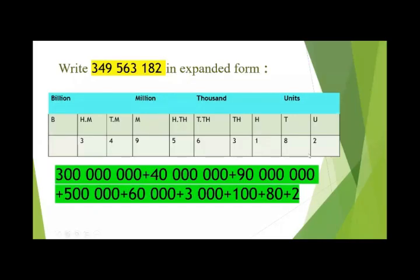Our next topic is to write 349,563,182 in expanded form. First we place all digits in the place value table starting from right. The place value of 3 is 300,000,000; 4 is 40,000,000; 9 is 9,000,000; 5 is 500,000; 6 is 60,000; 3 is 3,000; 1 is 100; 8 is 80; 2 is 2.